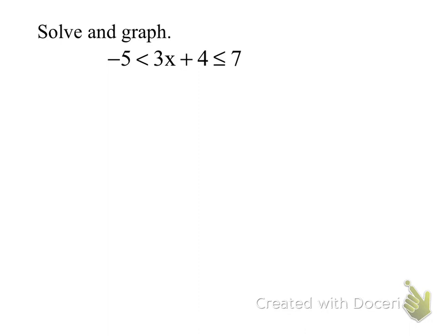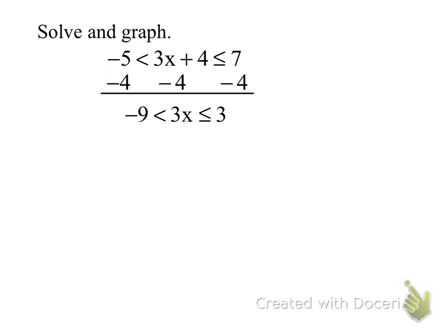Now they're getting a little more complicated. What do we do first? We're solving for x, so we want to peel everything else away. We always undo our adding and subtracting first — subtract from all three sides. That gives us negative 9 is less than 3x, which is less than or equal to 3.